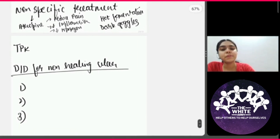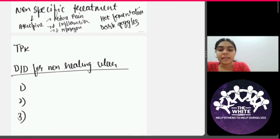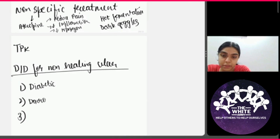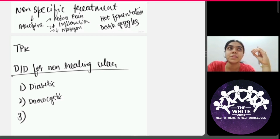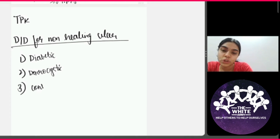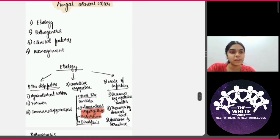The last thing to cover is the differential diagnosis for a non-healing ulcer. If six to eight weeks of antifungal have been given and the ulcer still hasn't healed, consider: the patient may be diabetic, preventing complete healing; there may be a constant focal source of infection like dacryocystitis harboring organisms; or there may be contamination of the medication itself. These are the differentials to rule out in a non-healing fungal corneal ulcer. I hope this was helpful. Thank you.